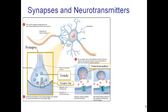Remember how the nervous system is an electrochemical communication system? We already covered the electricity part. Now we're covering the chemical part — the neurotransmitters that are released. The receptor sites are where the neurotransmitters bind.